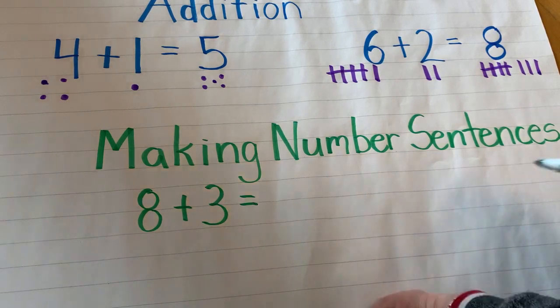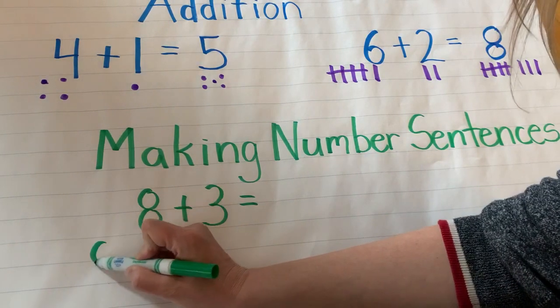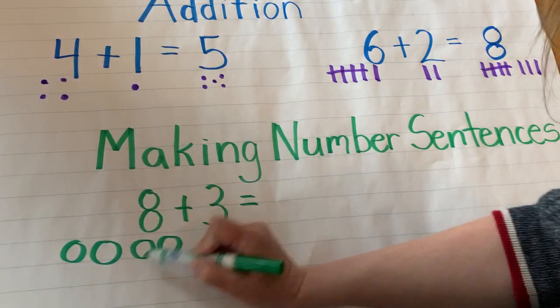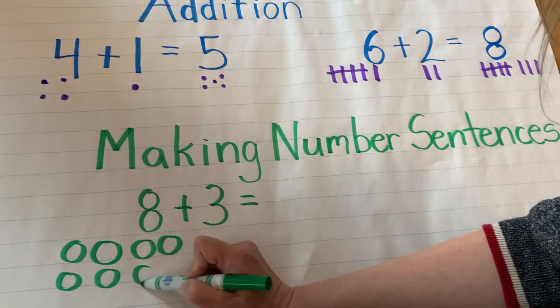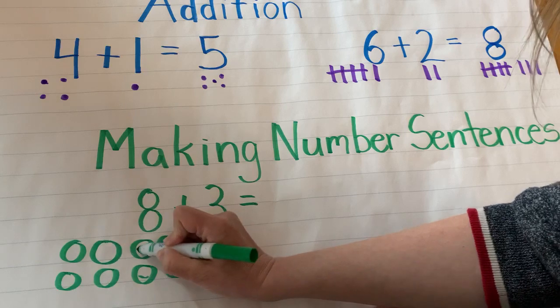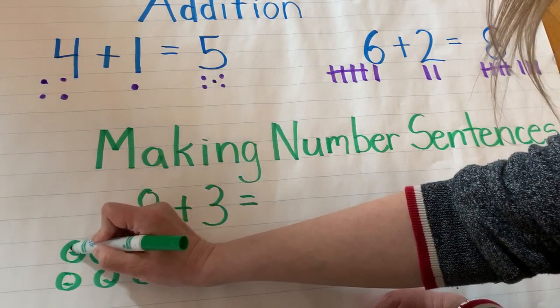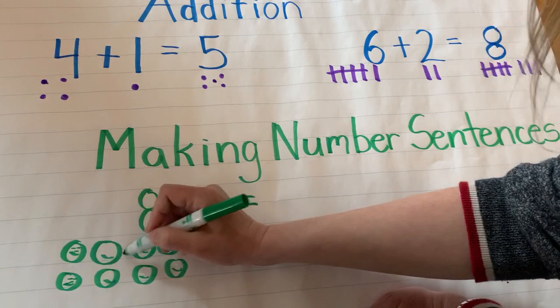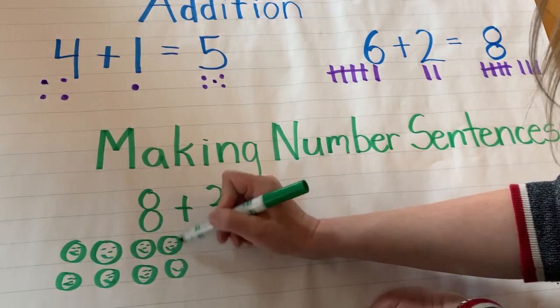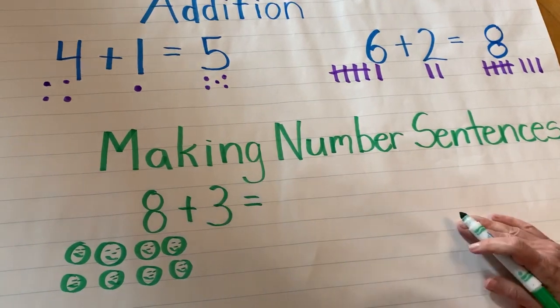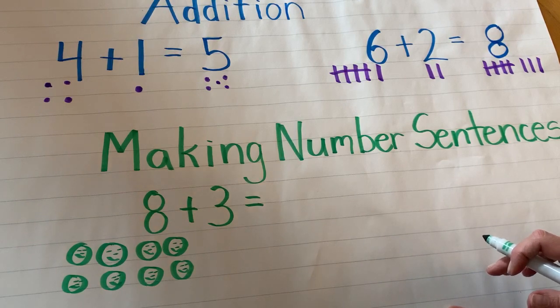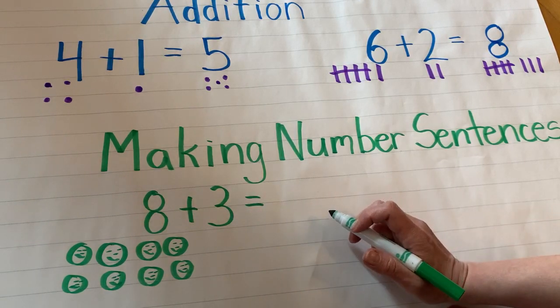Well, I can draw 4 happy faces, 4 and 4. So 4 and 4 gives me 8 happy faces and 3 suns.